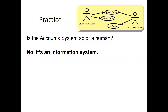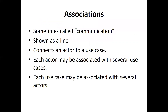In this account system, is the account system actor a human? Account system generally implies it's an information system. You need to be very specific about how you name your actors. An actor is associated with a particular use case, sometimes called a communication. Associations are the connections between the actor and the use case — shown as a line, sometimes with an arrow. It connects an actor to a use case, and each actor may be associated with several use cases.